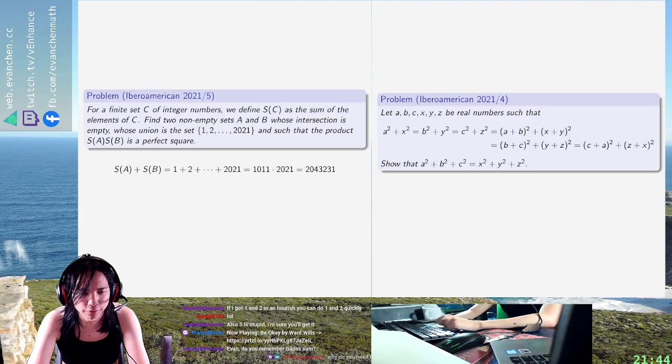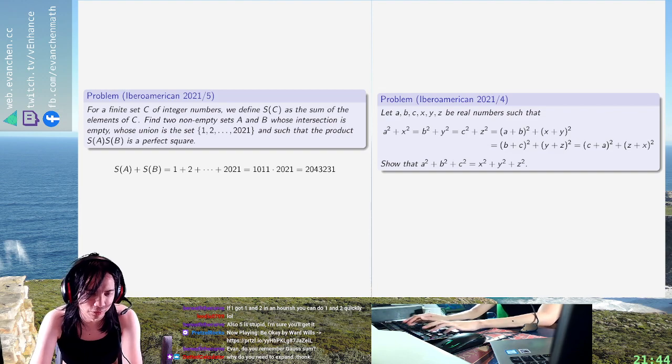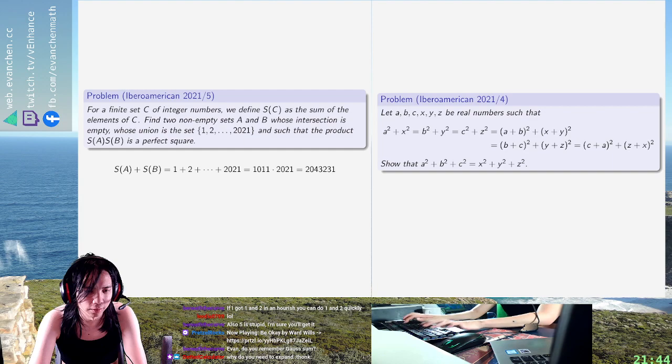Okay, so I want two numbers. First figure out what the sums are and then worry about the set part later because I don't think the set part is going to cause a problem. And then I want the product to be a square.